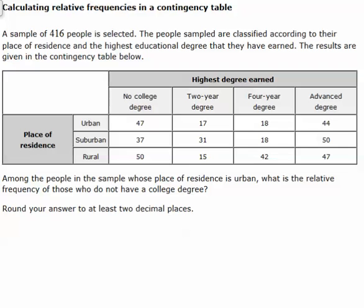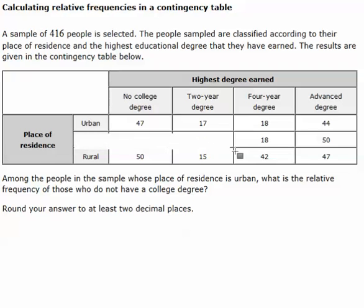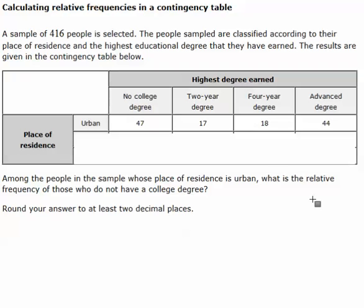A sample of 416 people is selected. The people sampled are classified according to their place of residence and the highest education degree they have earned. The results are given in the table below — here are all of our urban people and their degrees, suburban, and then rural. Among the people in the sample whose place of residence is urban, what is the relative frequency of those who do not have a college degree? We're only looking at urban. 47 have no college degree, so 47 is our numerator.